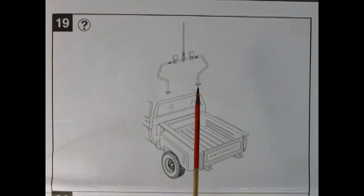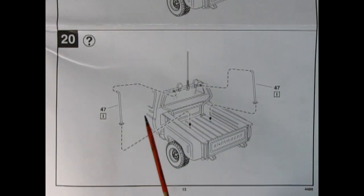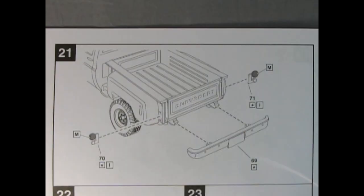Panel 19 shows the optional roll bar being dropped into place. Panel 20 shows the support bars for the roll cage being attached at the top, and then the bottom pins being dropped in on the floorboards. To complete our stock pickup truck we have the backup lights being glued onto the side of the back of the box, as well as the rear bumper being glued in place on the ends of the frame rails.